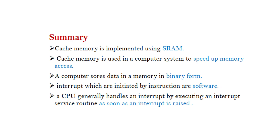Summary: Cache memory is implemented using SRAM and is used in a computer system to speed up memory access. A computer stores data in memory in binary form. Interrupts initiated by instruction errors are software interrupts. A CPU generally handles an interrupt by executing an Interrupt Service Routine as soon as an interrupt is raised.